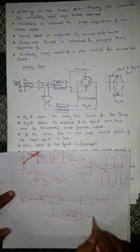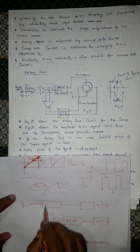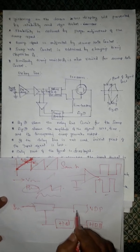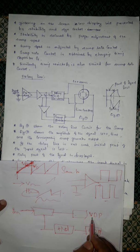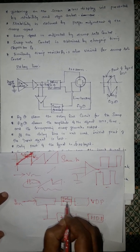So before to give to the vertical deflection system, we have to put a delay line. Why we have to put a delay line?